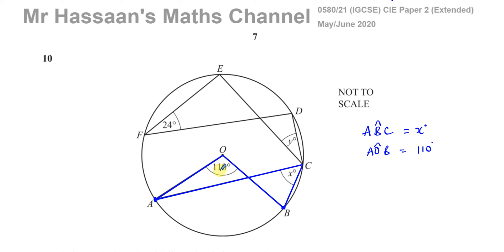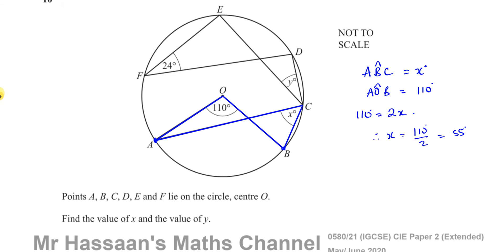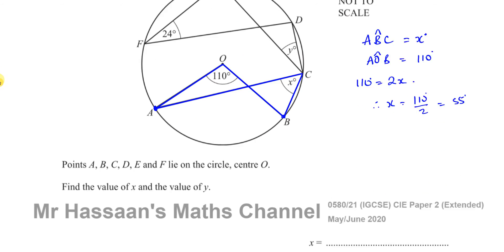And the other one's at the circumference. The one at the center is always twice the one at the circumference. So I know that 110 degrees is going to be two times what X is. That means X is going to be a half of 110, which is going to be 55 degrees. So we know that X is 55 degrees.